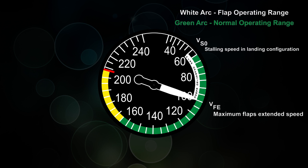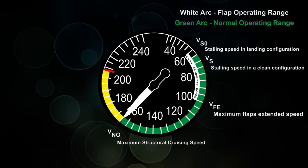The green arc is the normal operating range, and when you normally fly, you should be in the green arc. The low end of the green arc is your stalling speed in a clean configuration, or with the gear up and the flaps up, and we call that VS, or you might see it as VS1 in some places. At the end of the green arc, you have VNO, or Maximum Structural Cruising Speed. And you shouldn't exceed this speed unless you're in smooth air, and then only with caution.